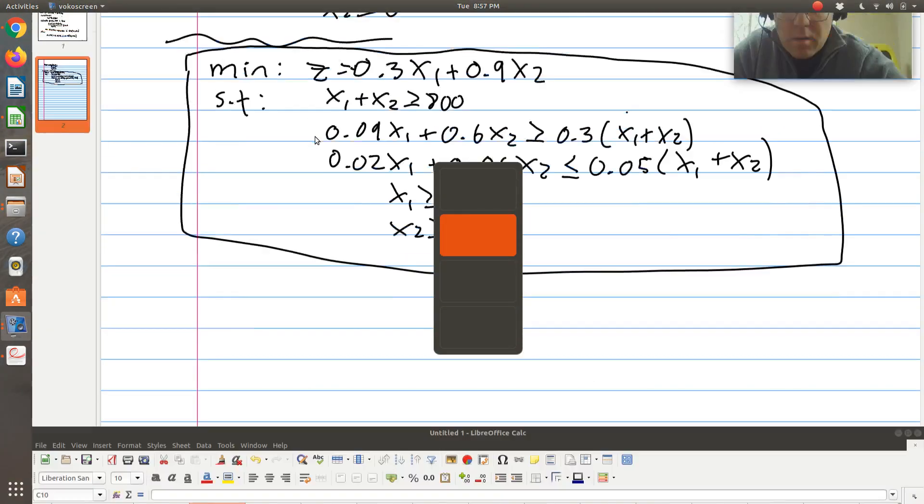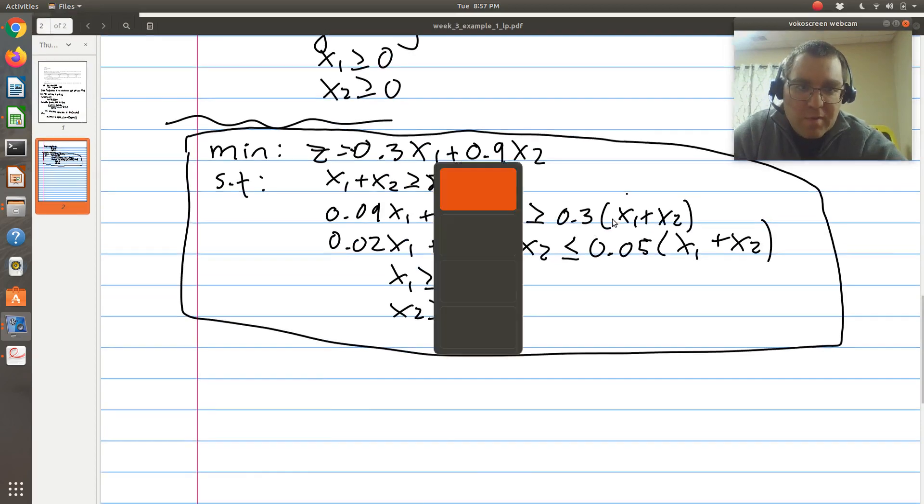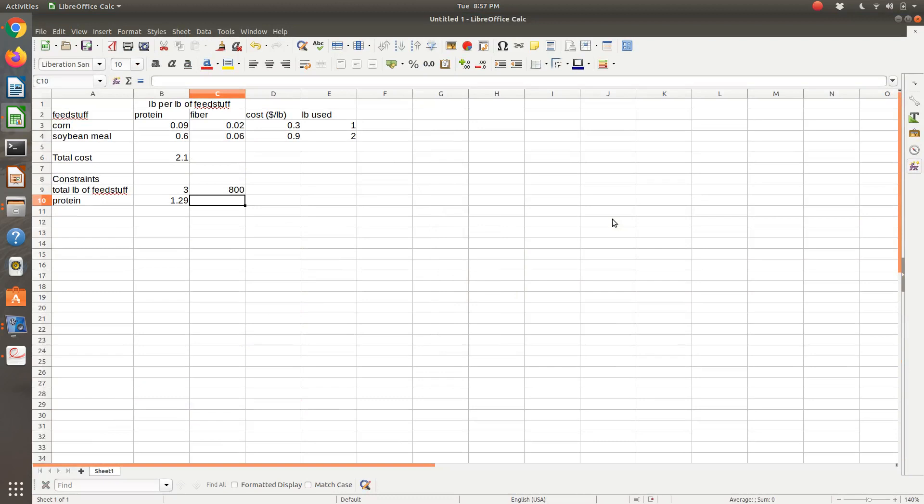And that needs to be greater than or equal to 0.3 times x1 plus x2. So 0.3 times the sum of my, or the amount of total feed produced.